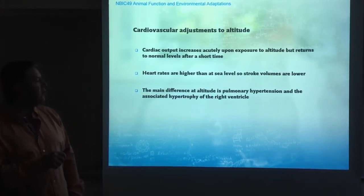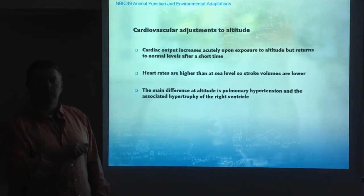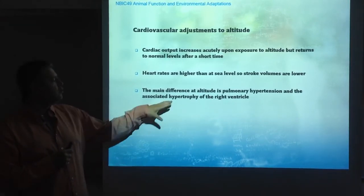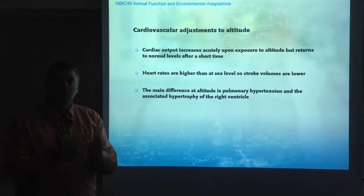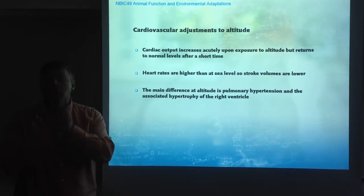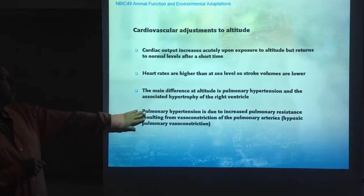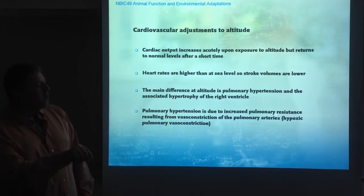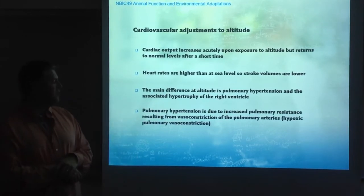Pulmonary hypertension can involve hypertrophy of the right ventricle. Subjects exposed to high altitude for a relatively long period begin remodeling the right ventricle — the ventricle that pumps into the lungs. Because of the increased pressure, the heart muscle works harder and becomes thicker. This pulmonary hypertension associated with altitude is due to increased pulmonary resistance, as covered previously in the discussion of hypoxic pulmonary vasoconstriction.